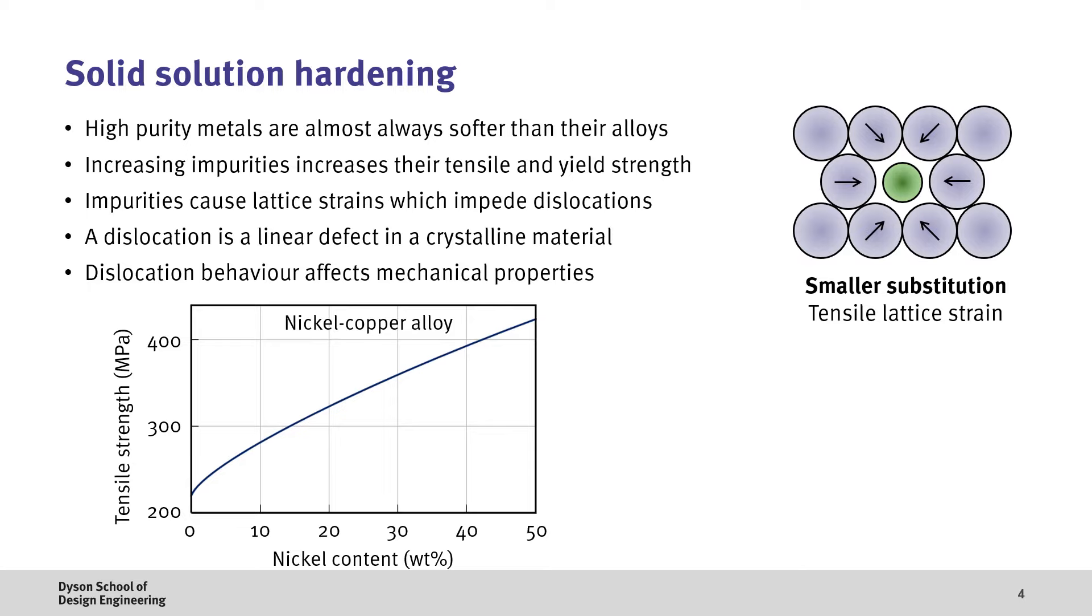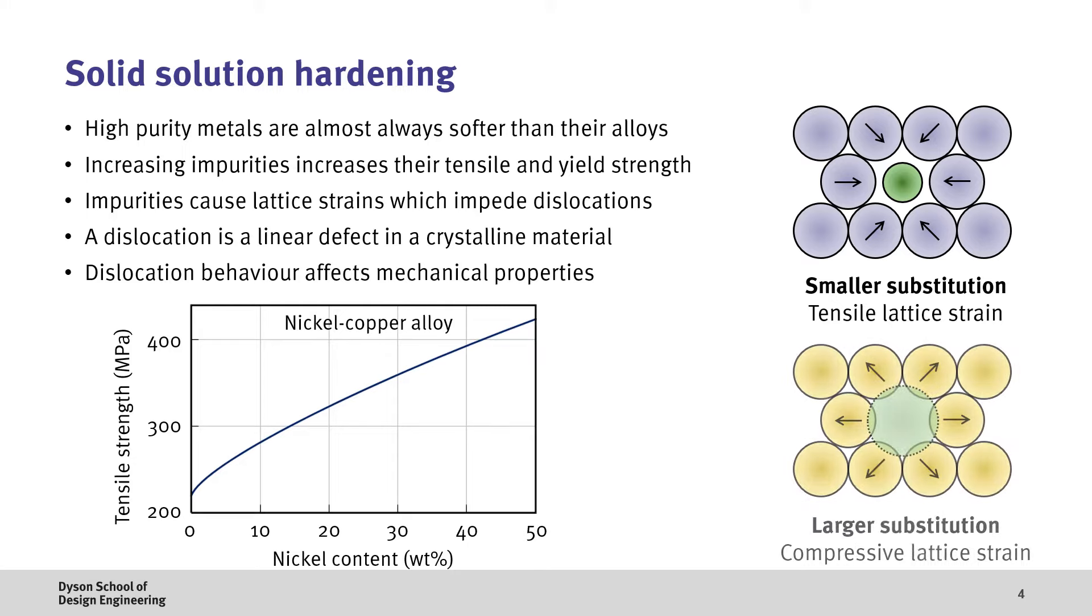In terms of the type of impurities and their impacts, we can alloy in an element which is smaller than the host solvent atoms to create a tensile lattice strain. Alternatively, we can alloy the material with a solute which is larger than the host element resulting in a compressive lattice strain. In both of these cases, the lattice strain makes it more difficult for these dislocations to move which results in an increase in the strength.